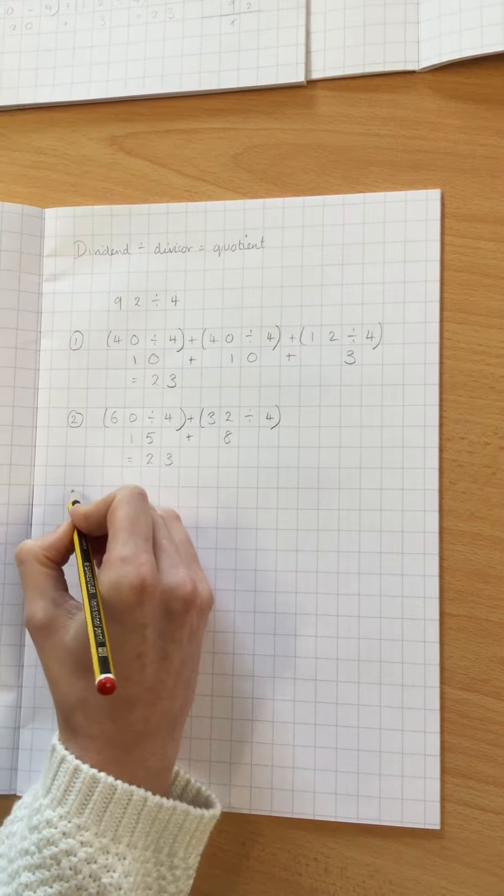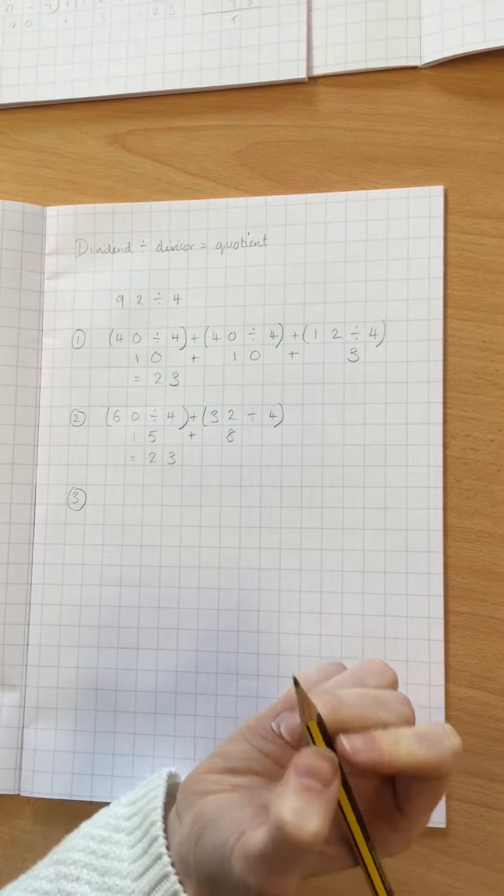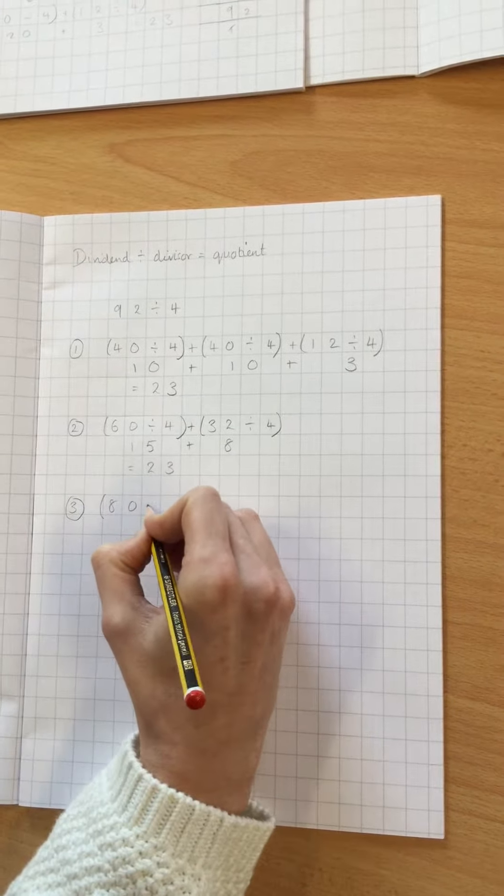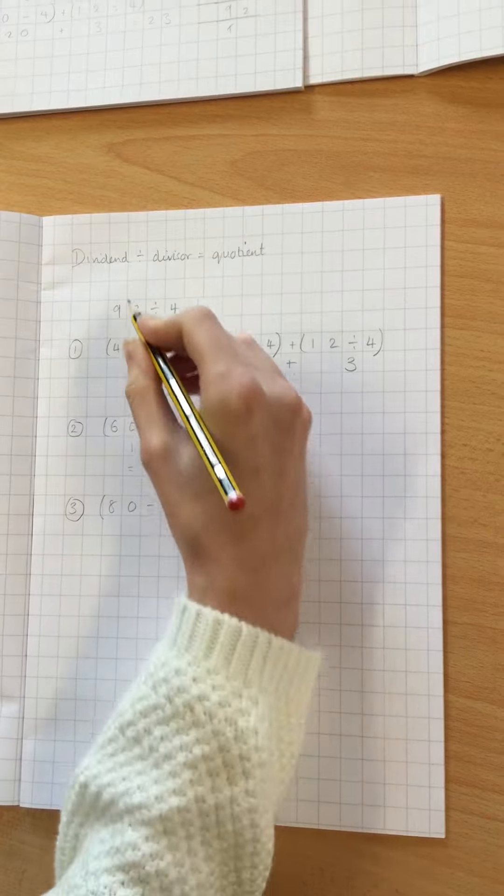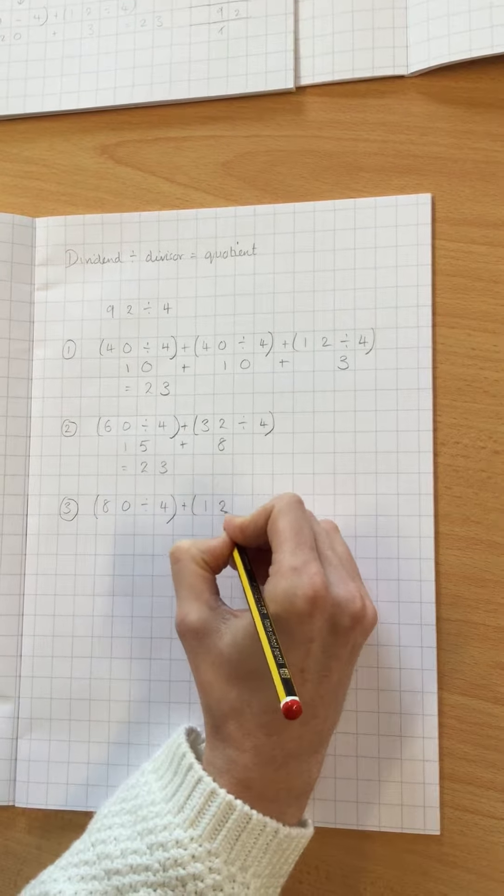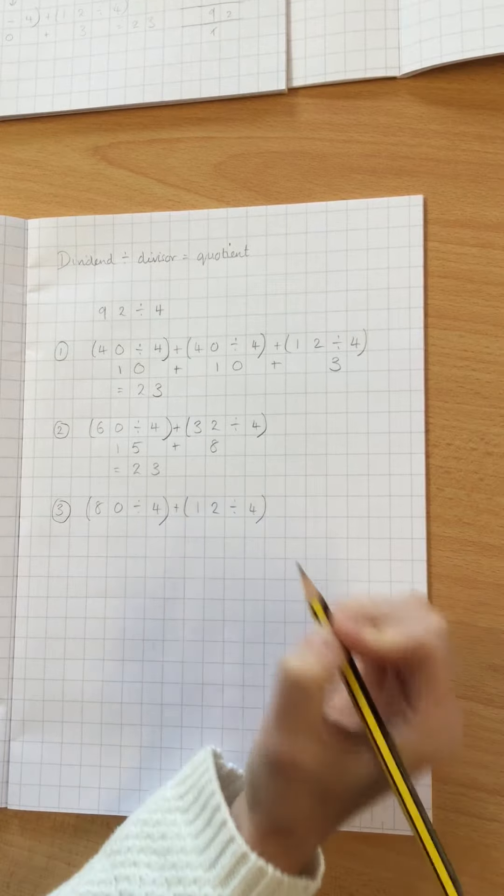One final example. I could do it in larger chunks. I could do 80 divided by 4. I want 92, so I've got 12 left, so I'm going to do 12 divided by 4.